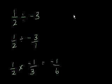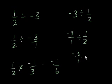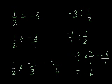Let's do it the other way. What if I had negative 3 divided by 1 half? Same thing. Negative 3 is the same thing as minus 3 over 1 divided by 1 half, which is the same thing as minus 3 over 1 times 2 over 1, which is equal to minus 6 over 1, which is equal to minus 6.